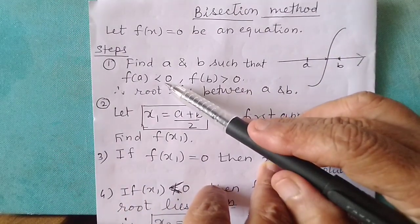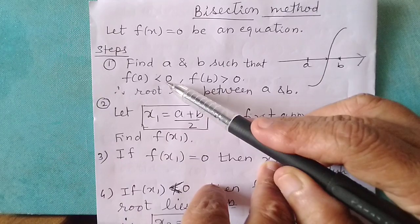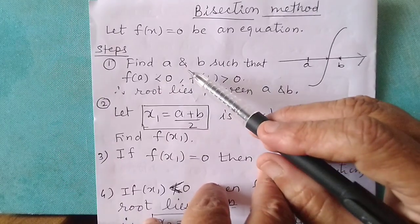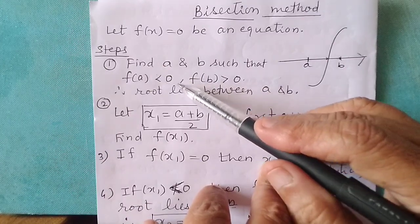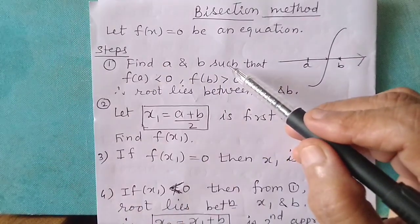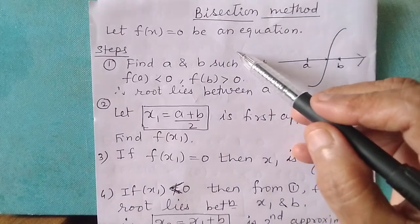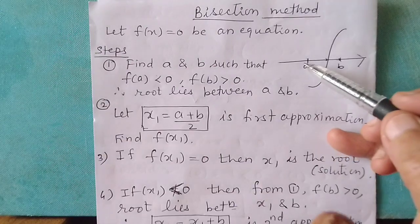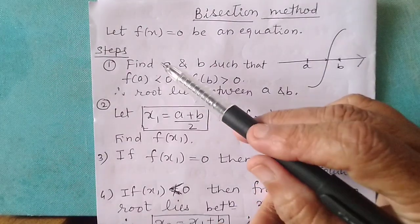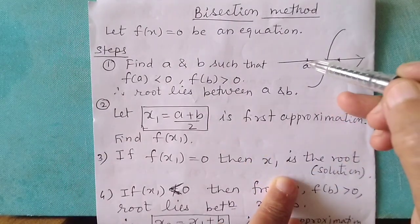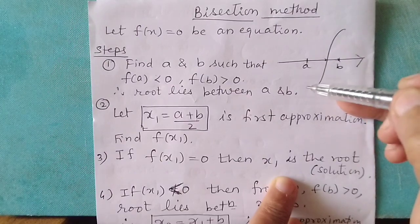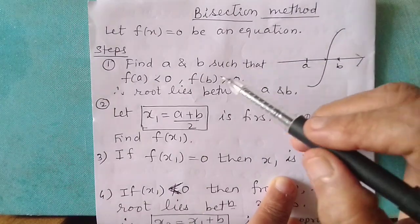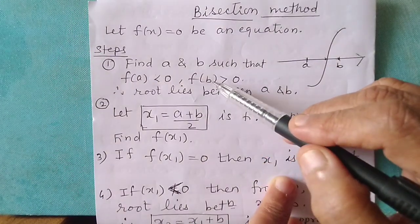How do we find that closed interval a, b? We find f of a by substituting x equals a in the function, and to find f of b we substitute x equals b in the function. f of a will be negative because the y value at a is negative, and the value of y at b is positive. So f of a and f of b should be of opposite signs.